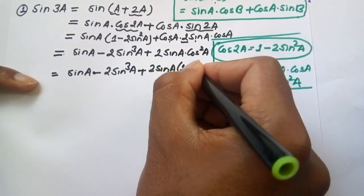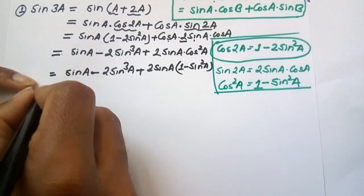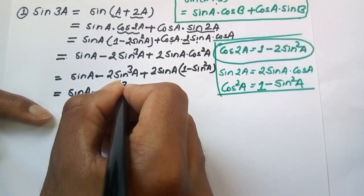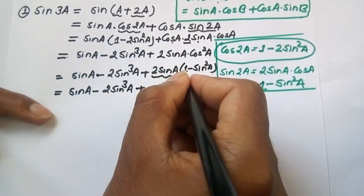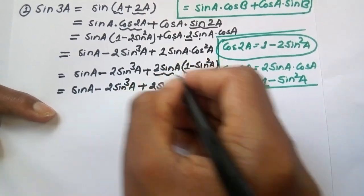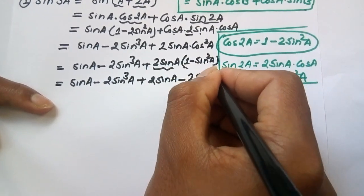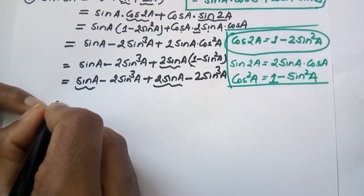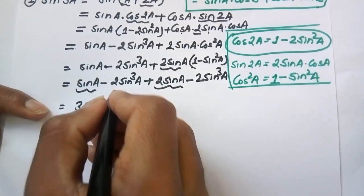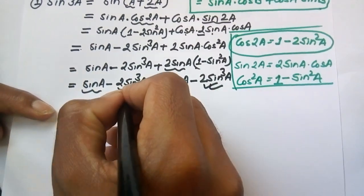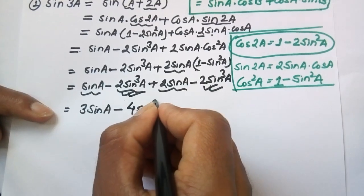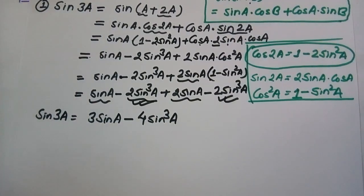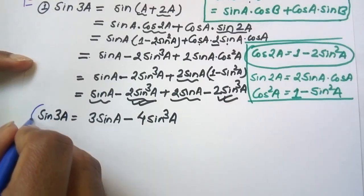Now we use the formula cos square a equals 1 minus sine square a. Substituting: sine a minus 2 sine cube a plus 2 sine a into (1 minus sine square a). Expanding: sine a minus 2 sine cube a plus 2 sine a minus 2 sine cube a. Collecting terms: 3 sine a minus 4 sine cube a.